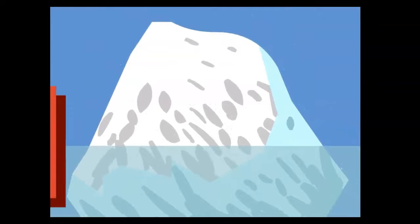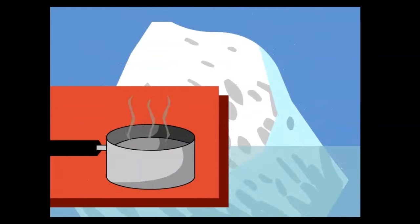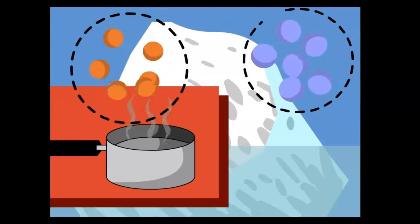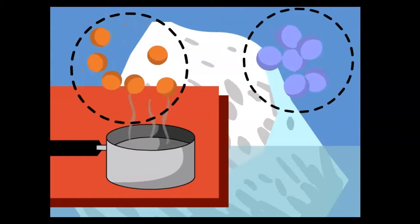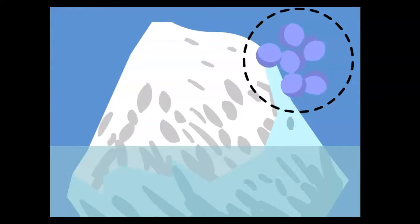For example, there's a lot more heat in an iceberg than a pot of boiling water. I'm sure the boiling water has a higher temperature, but the iceberg is a lot bigger. The molecules in the iceberg aren't moving as fast, but there are lots more of them. All that motion adds up to a greater heat energy.